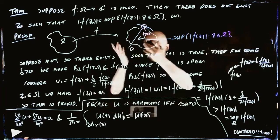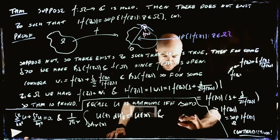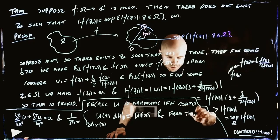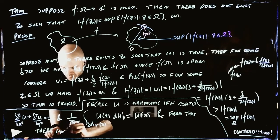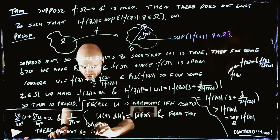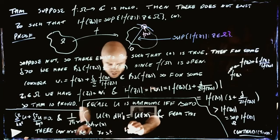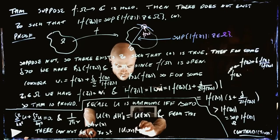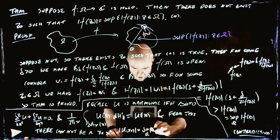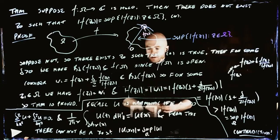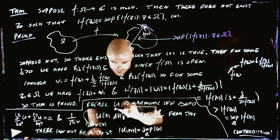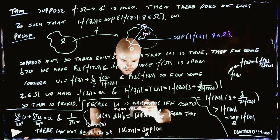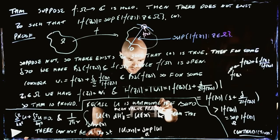And I claim that the mean value property implies the same thing: there cannot be an x0 such that the absolute value of u of x0 equals the supremum over the domain of the absolute value. So tell me why you believe that — why, from the mean value property, do we have the same result?